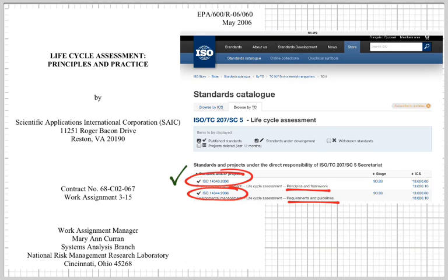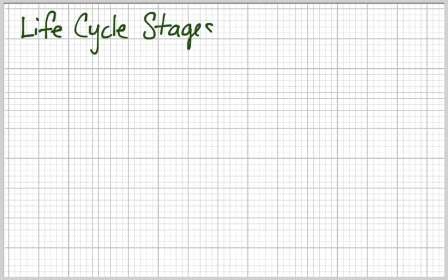Our emphasis today will be on ISO 14040, the principles and frameworks — there's that framework term popping right up. Life cycle stages: the term stages is used to basically break up the life cycle of a technology, say a photovoltaic, into chunks, into timely chunks.